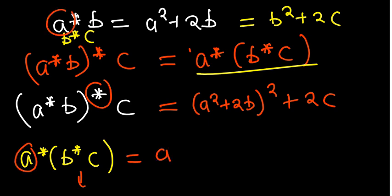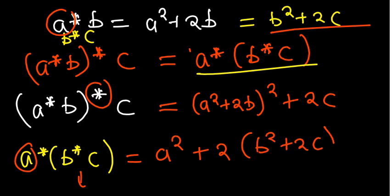So substitute: the first part is a, which is a itself, so it will just remain a squared. And then where there is b now, we are putting b star c, which is equal to b squared plus 2c. So the question at hand is, are these matching up? Are they the same? Clearly, we can see that they're not basically the same. So since this is also not true, the binary operation is not associative.